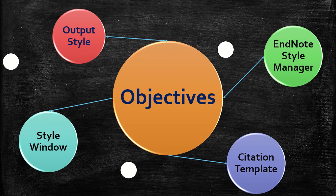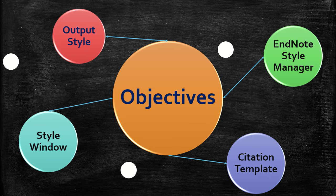The learning objectives are: understand output style, explore EndNote style manager, explore style window, and explore different options in citation template.